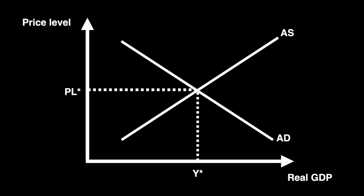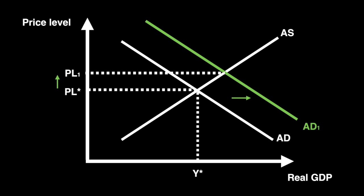Now that we've seen short-run aggregate supply shifting, let's look at aggregate demand. If any of the components of aggregate demand, such as consumption, rise, then aggregate demand will shift to the right. This will result in an increase in the price level from PL star to PL1 as a result of demand pressure. Additionally, this will increase real GDP to meet the rising level of demand throughout the economy. This is seen in the change of real GDP from Y star to Y1.